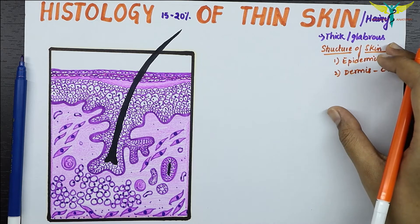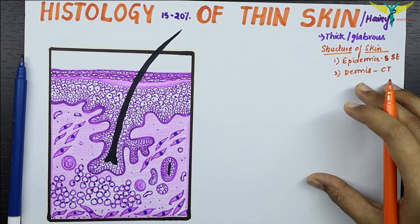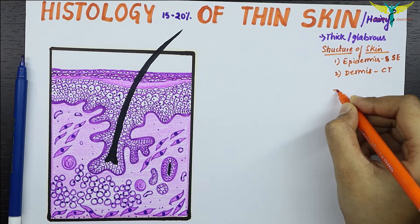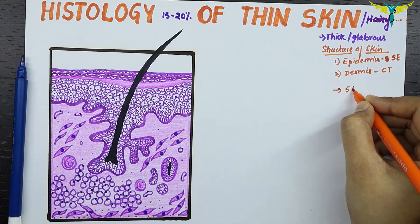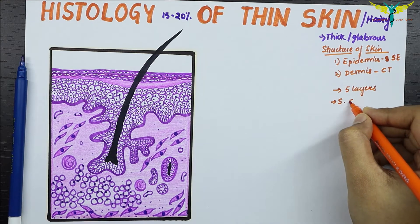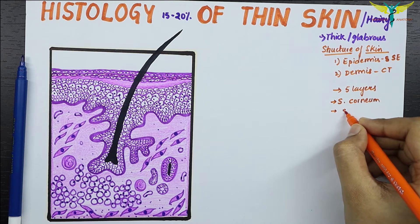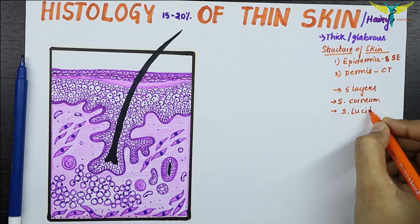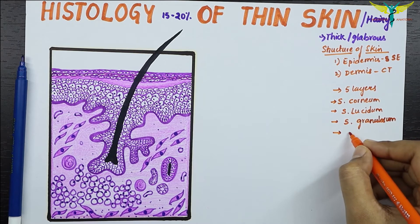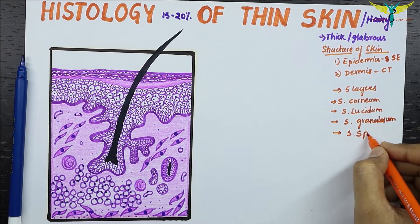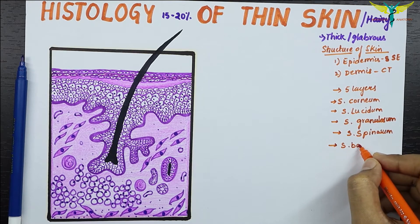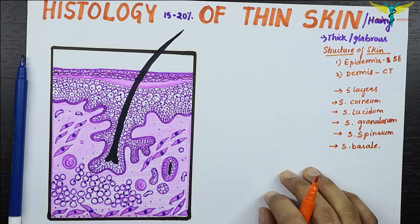We should know the layers of the epidermis. The epidermis consists of five layers: the first or most superficial layer is the stratum corneum, the second is the stratum lucidum, the third is the stratum granulosum, the fourth is the stratum spinosum, and the fifth is the stratum basale, which is the innermost or deepest layer.